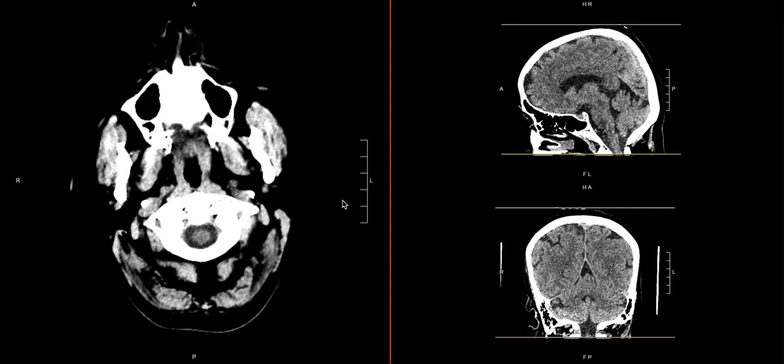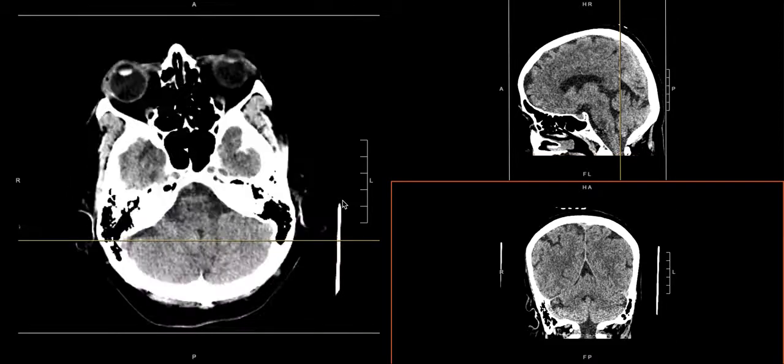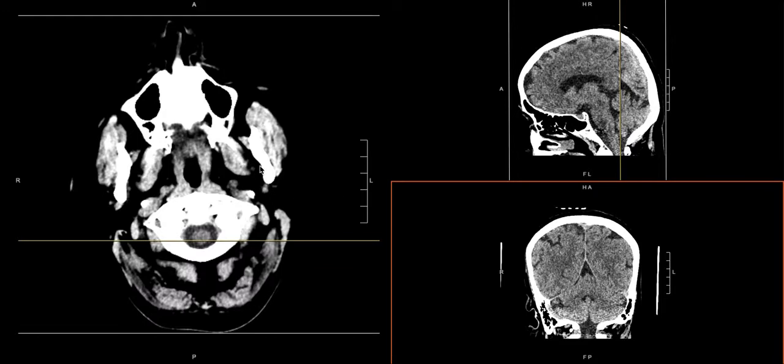Now we're going to go over how to look at the intracranial contents in the skull when you're doing your search pattern for a non-contrast head CT scan. This video is going to be broken up into a few different parts because there are a few different sections that we're going to look at in our search pattern. There are multiple ways to do this — this is just one way.